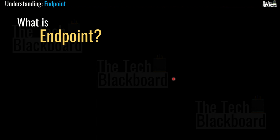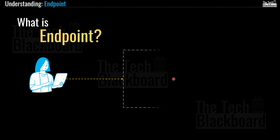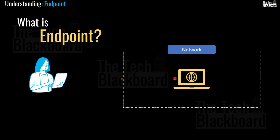An endpoint is any device that connects to a computer network. Whenever you connect to a network or a resource on a network, you need an endpoint. These endpoints can be public or private. For example, if you have a virtual machine on an Azure virtual network, you need an endpoint to connect to it. Similarly, resources such as Azure database, Azure storage, and even individual files in Azure storage have an endpoint.